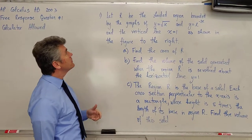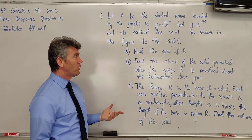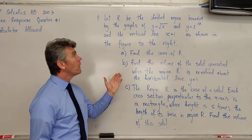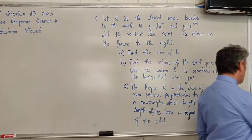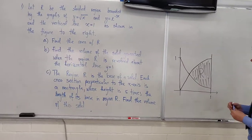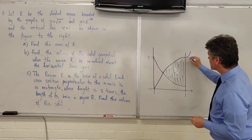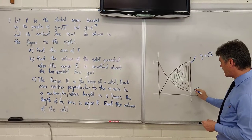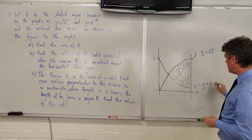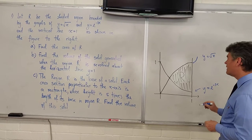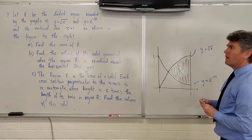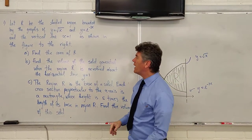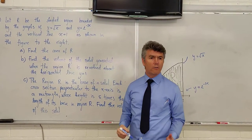There's a shaded region bounded by the graphs of y equals square root of x and y equals e to the negative 3x, and the vertical line x equals 1. This is the region that we are talking about. The graph on the top, this is y equals the square root of x. The graph on the bottom is y equals e to the negative 3x. What do we want to do? We're going to find the area of the region R. How do we do that?